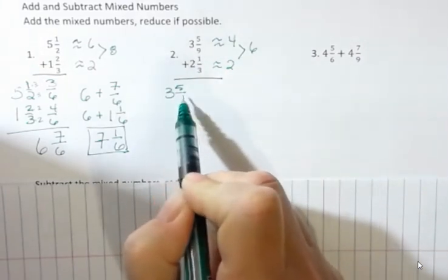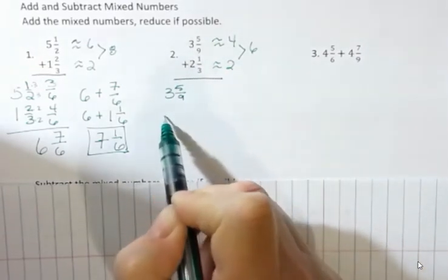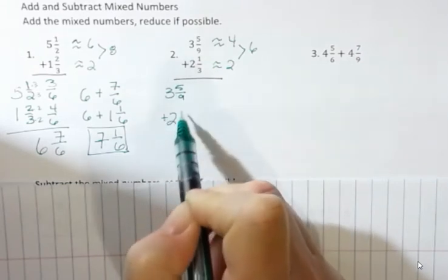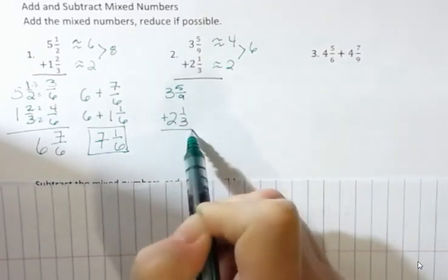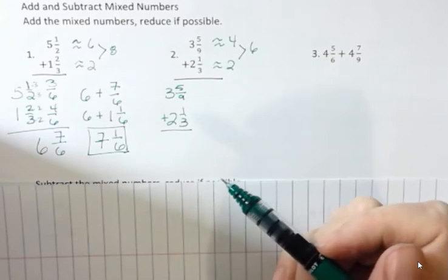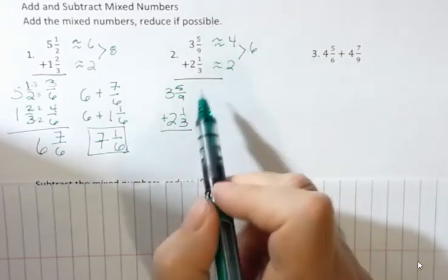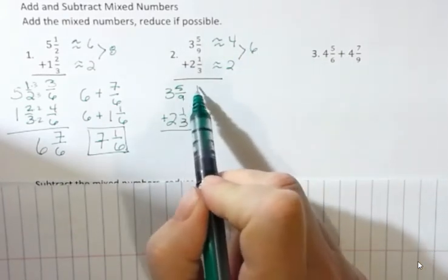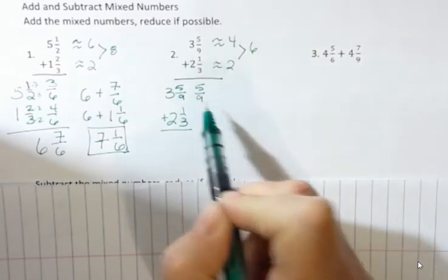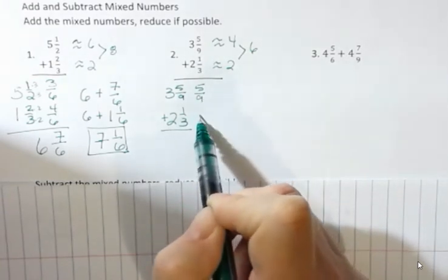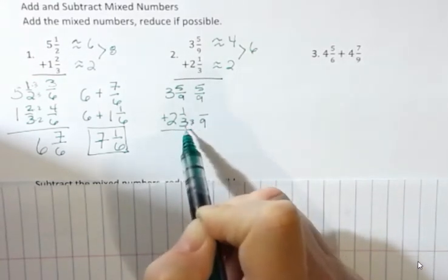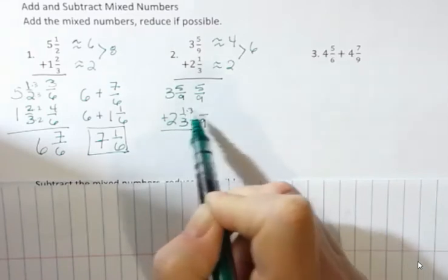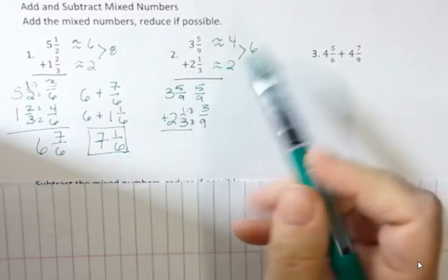Let's see what we actually have here. Three and five ninths. What's the common denominator for nine and three? You can always stop the video, try these, come back and see how you did. The common denominator is nine. So I'm not changing this but I am going to write five ninths. And then this one's going to be nine. How many ninths? Well, three times three is nine, one times three is three.